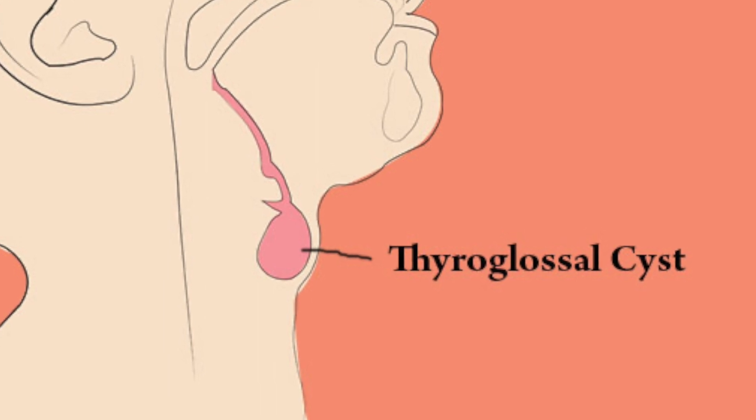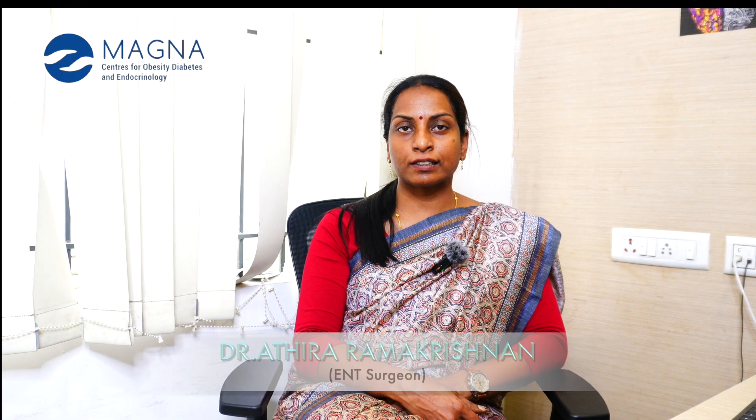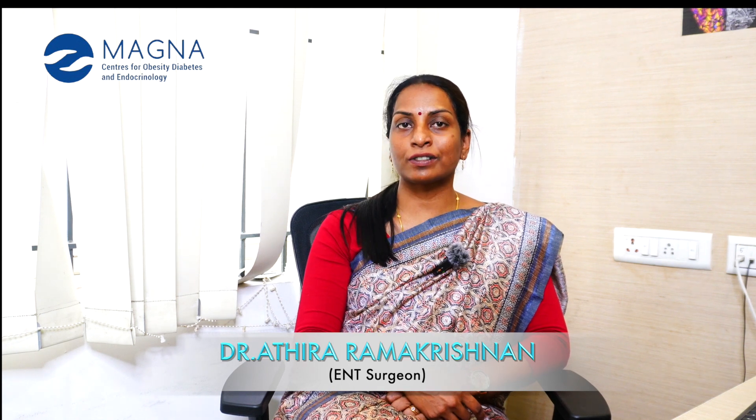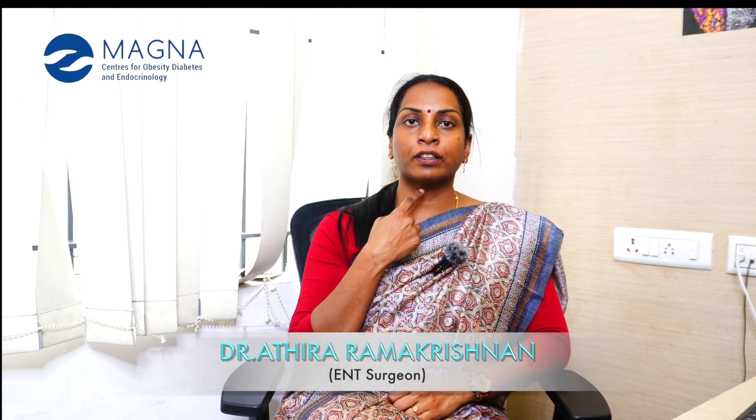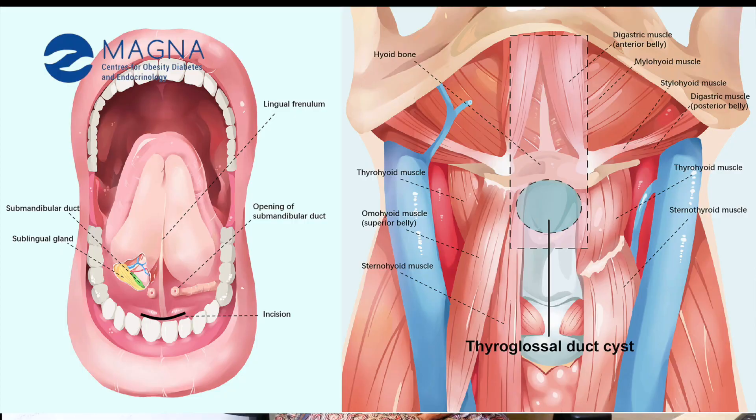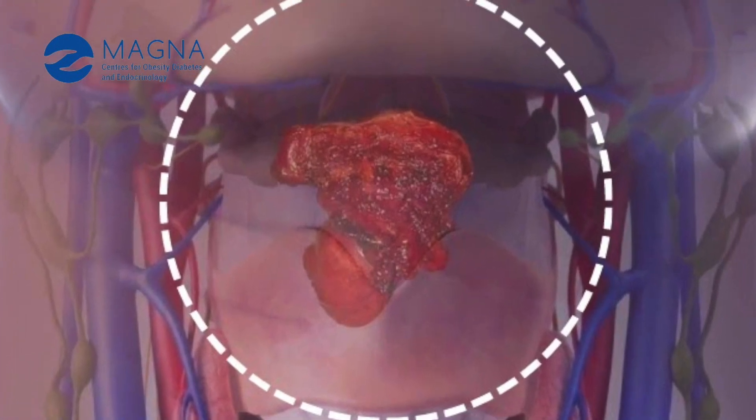Today we are going to talk about thyroglossal cysts. Thyroglossal cysts arise from something called the thyroglossal tract. Our thyroid gland actually originates at the base of the tongue region, and from there, when the body is in the embryo stage, it descends down into the normal position of the thyroid, which is in the front, lower part of the neck. While descending, it may leave behind small groups of cells in the tract. The tract is called the thyroglossal tract, and when there are remnants of these tract cells, patients may later develop small cysts in that pathway of descent.